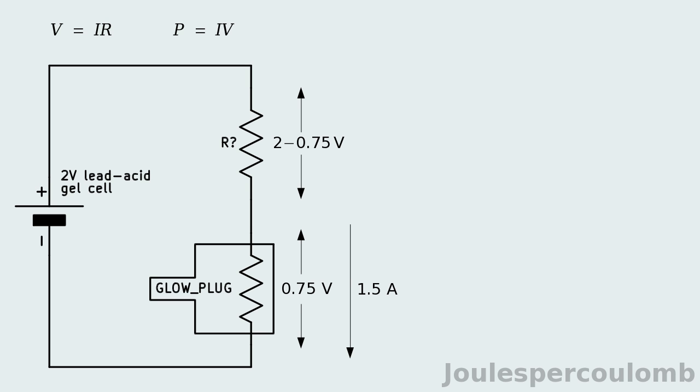The voltage across R must be 2 volts less than three quarters of a volt across the glow plug. There is no possibility that the current through R is not also one and a half amps, and so with these two values known, the resistance of R can be calculated using Ohm's law.